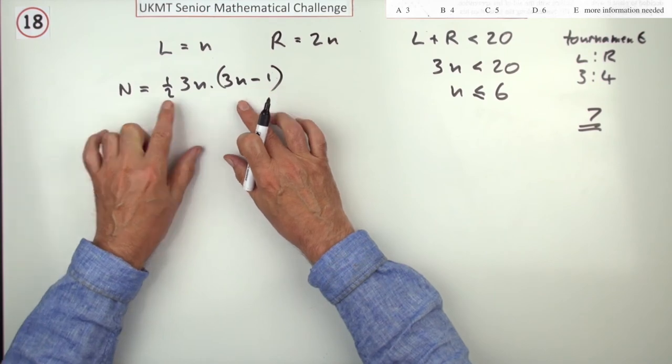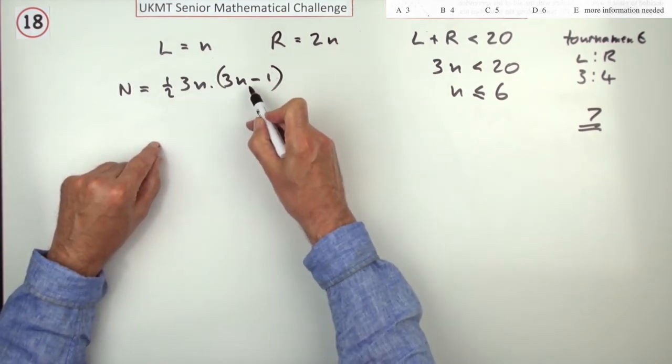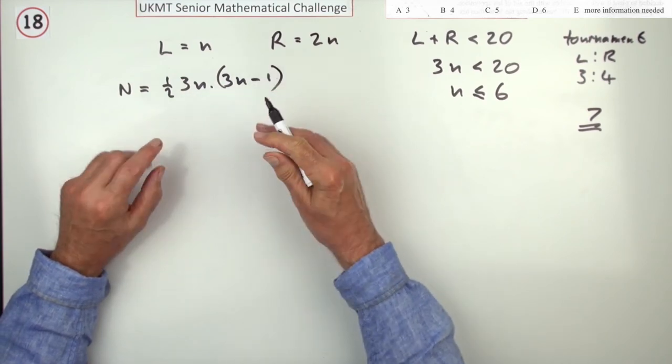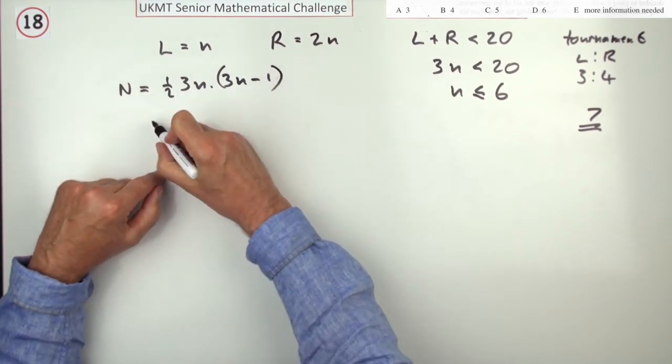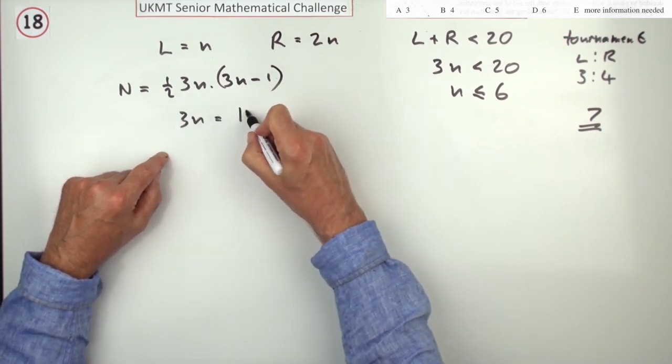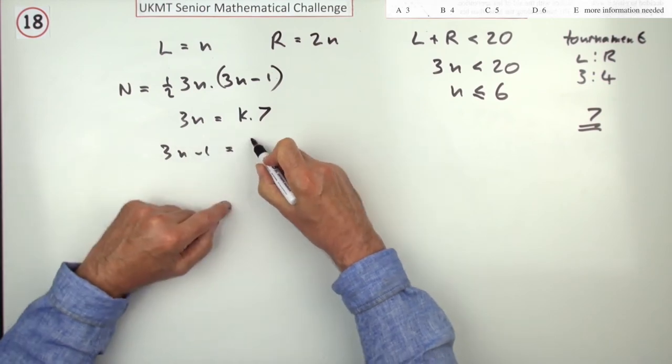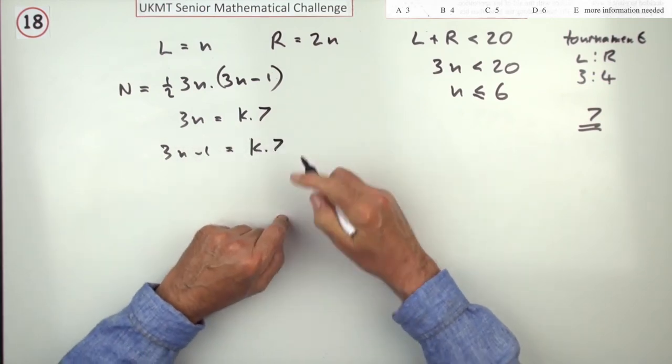So if this has to divide by 7, and that half isn't a problem here, because consecutive numbers means 1 of them is even, so that 2 will disappear and you will just have 2 numbers, then either that 3N divides by 7, so it's a multiple of 7, or the 3N minus 1 is some multiple of 7.